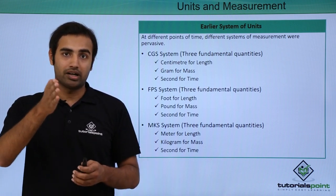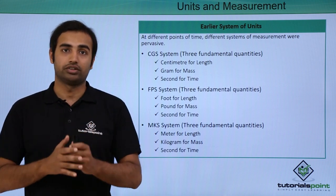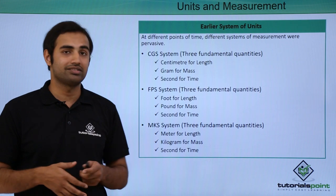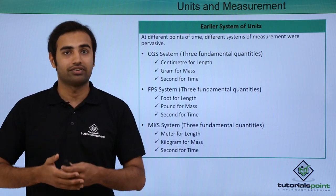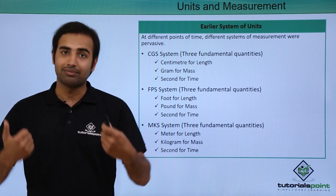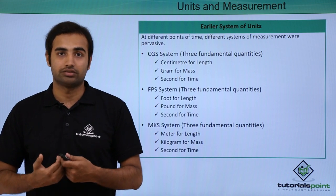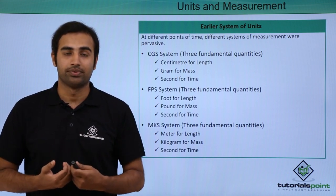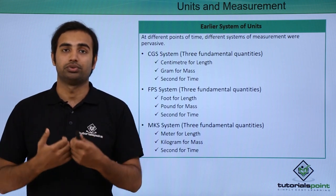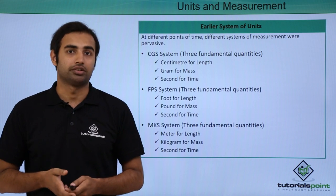Then ultimately the MKS system was largely prevalent in Europe, with meter for length, kilogram for mass, and second for time. Because these different systems were used simultaneously, there was a lot of difficulty among scientists to communicate measurements, and that's why there was a need to define a more fundamental set of units accepted by the international community — that's exactly when SI units came into picture.